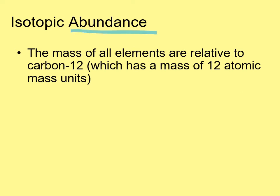Isotopic abundance — how prevalent, how much there is of each type of isotope — we're going to look at the calculations involving that. Let's use carbon as our example, since it's what we base atomic masses on anyway. The masses of elements are relative to carbon-12. We took carbon-12 and used whatever weight it has to determine all the other weights on the periodic table. Carbon-12 has six protons, and if it weighs 12, it's got six neutrons as well. So this is a particular isotope of carbon called carbon-12.